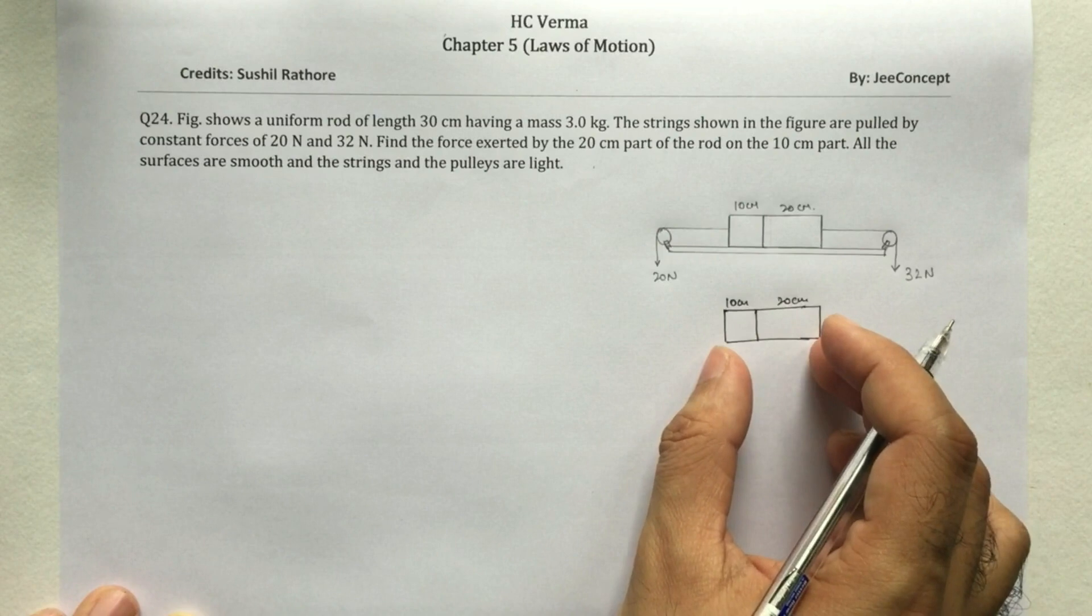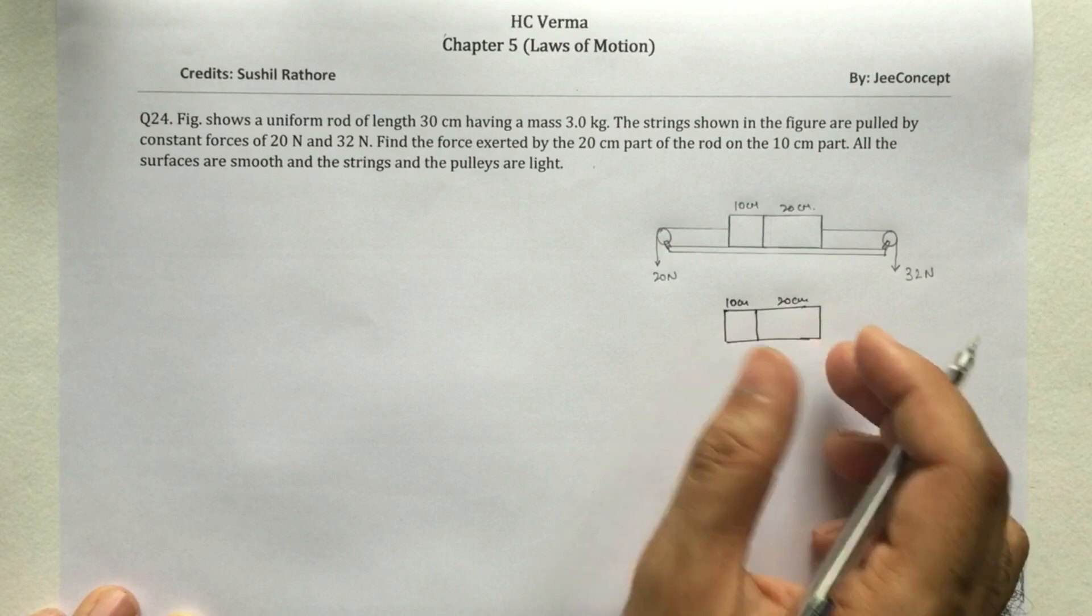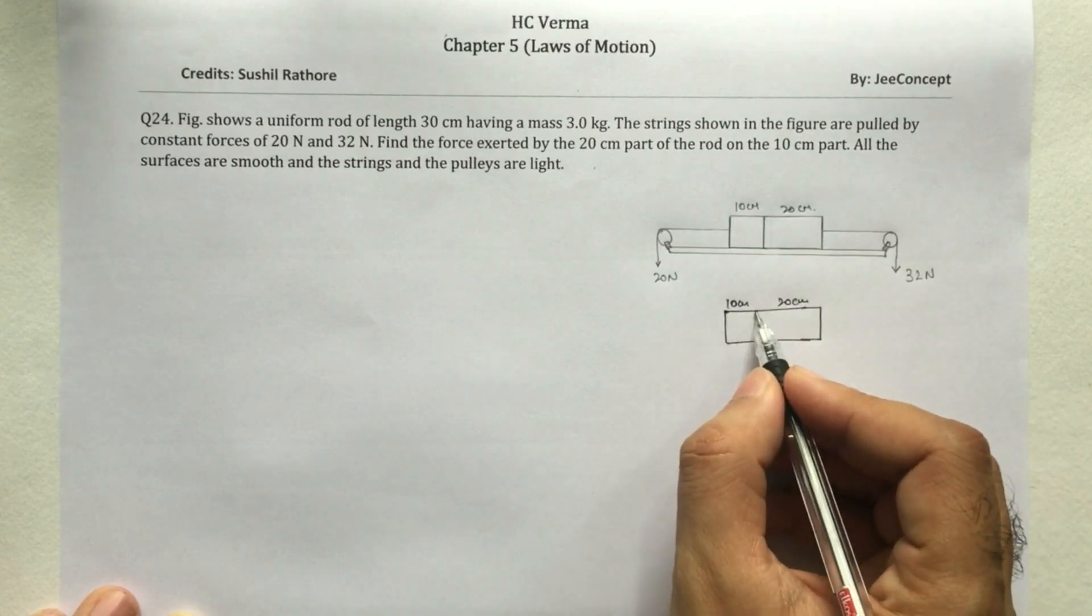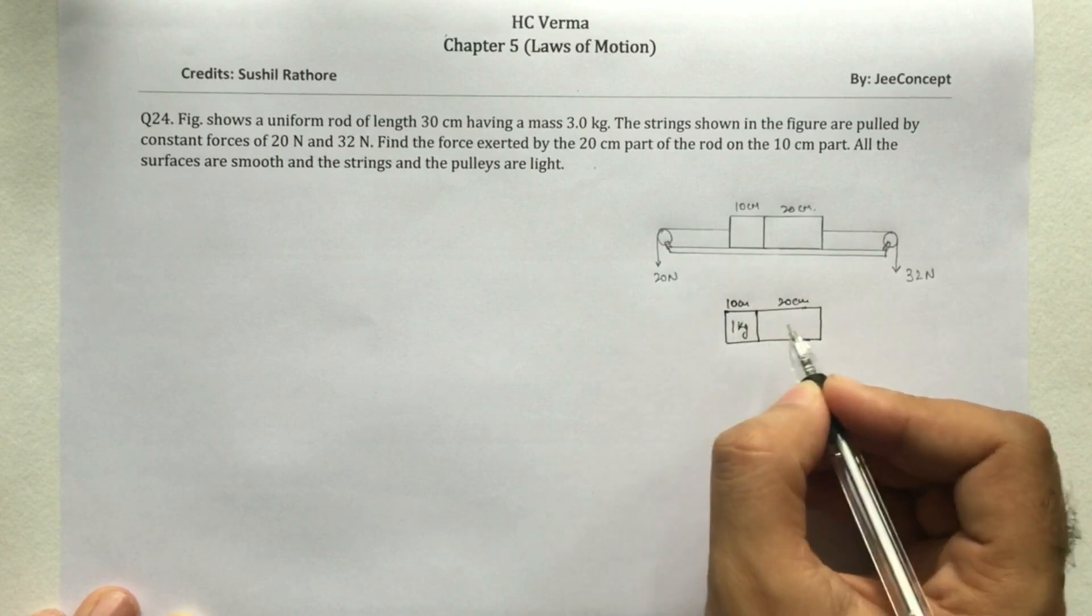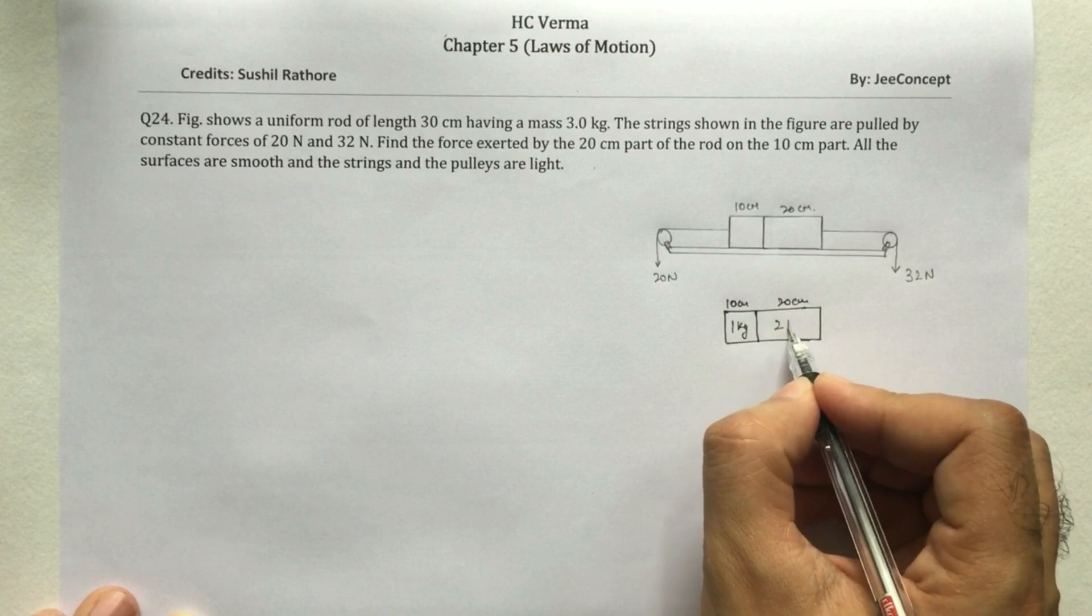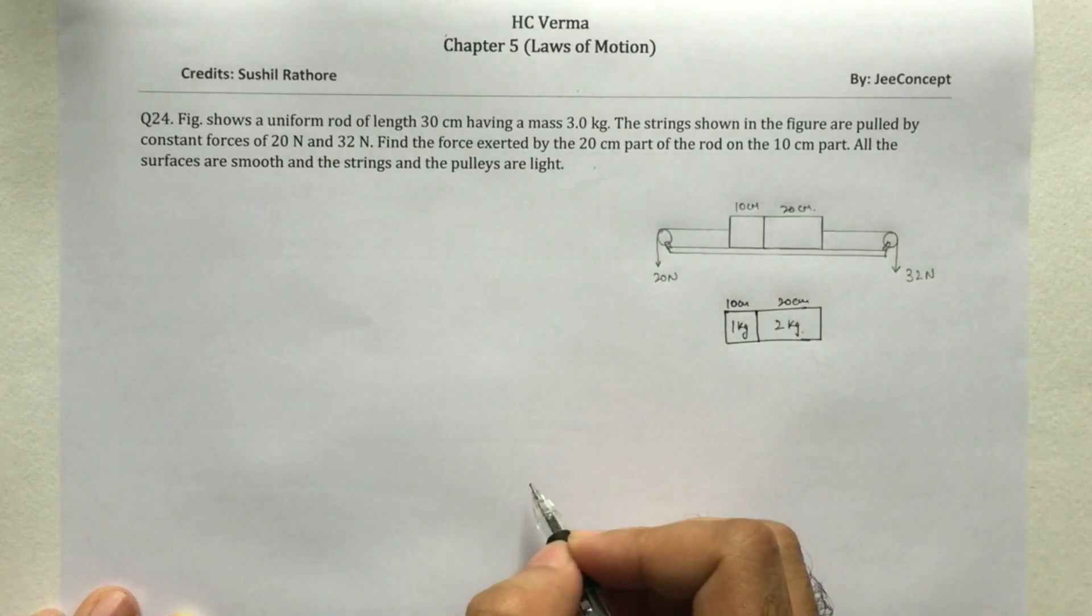The entire mass of this rod is 3 kg. So that means this 10 cm segment has a mass of 1 kg and this 20 cm segment has a mass of 2 kg.